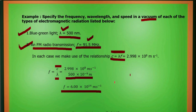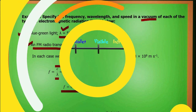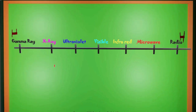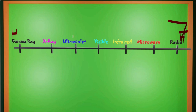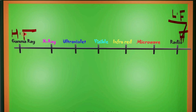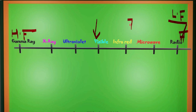Now let us discuss the electromagnetic spectrum and its different frequency ranges. The electromagnetic spectrum has a wide range starting from radio waves to gamma rays. There are seven ranges to remember: radio, microwave, infrared, visible, ultraviolet, X-ray, and gamma ray. Radio waves have very low frequency. Mobile signals lie between radio waves and microwaves. Visible light spectrum is also part of this range.